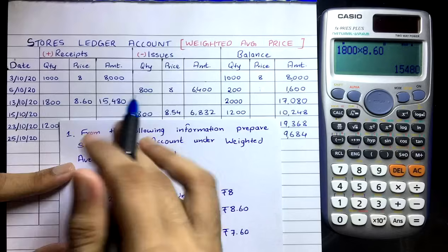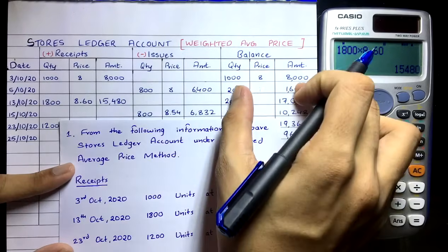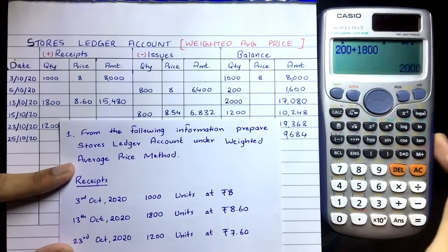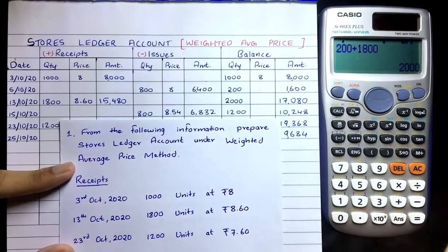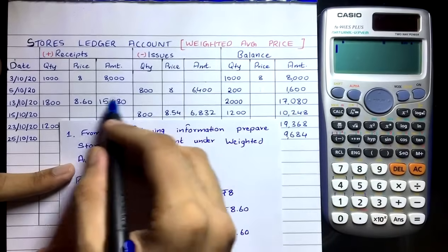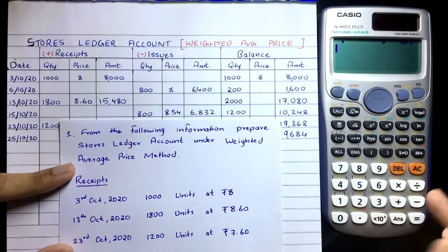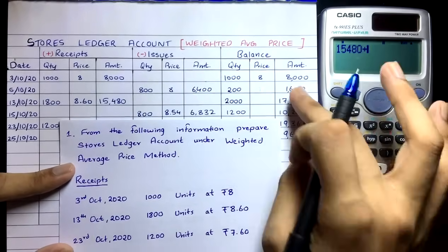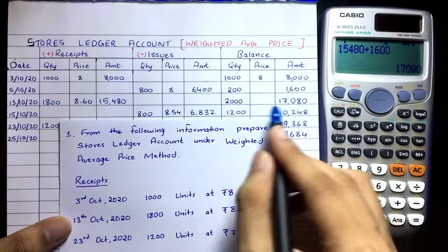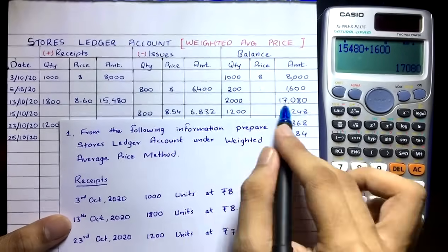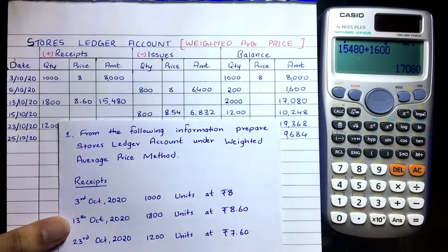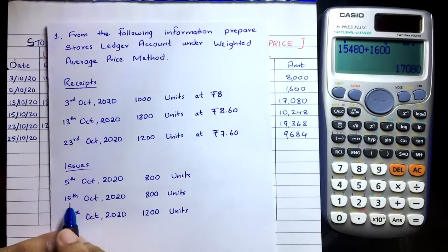We had 200 quantity costing ₹1,600 in the balance. Add the new receipt: 200 + 1,800 = 2,000 quantity. Add the costs: ₹1,600 + ₹15,480 = ₹17,080. New balance: 2,000 quantity costing ₹17,080.